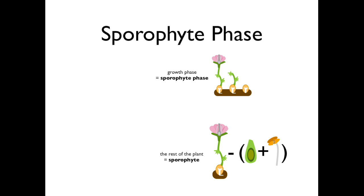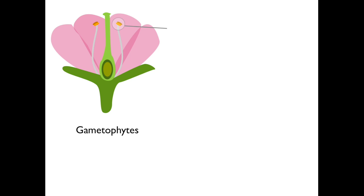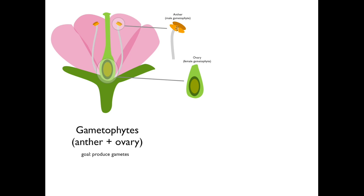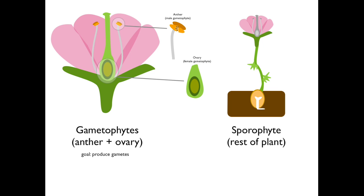We'll now identify the gametophytes and the sporophyte on a flower. Here we see the side view of your typical flower. The male gametophyte is found within this part of the plant called the anther. The female gametophyte is found in this part of the plant and is called the ovary. In summary, the gametophytes of the flower are the anther and the ovary, and their job is to produce gametes. The rest of the plant, or the plant in growth phase, is called the sporophyte. The sporophyte's job is to produce the anther and ovary so it can reproduce.